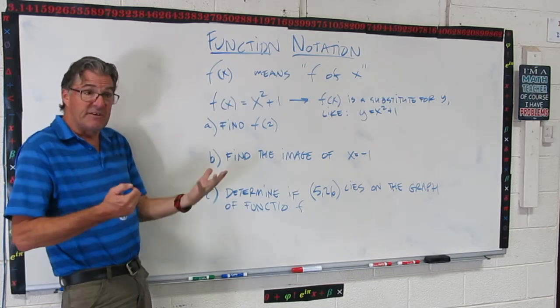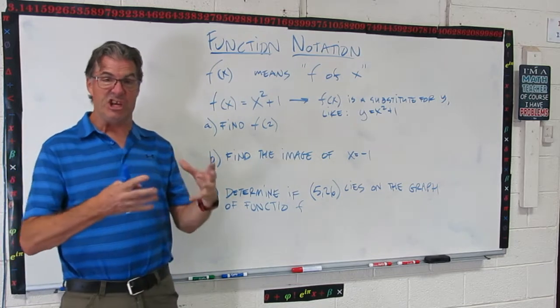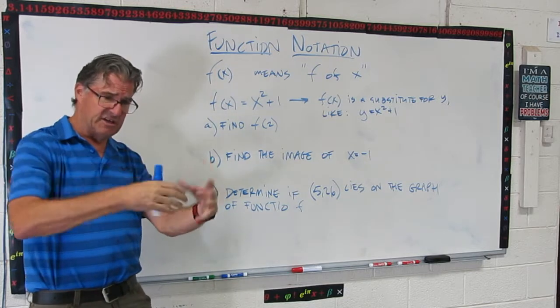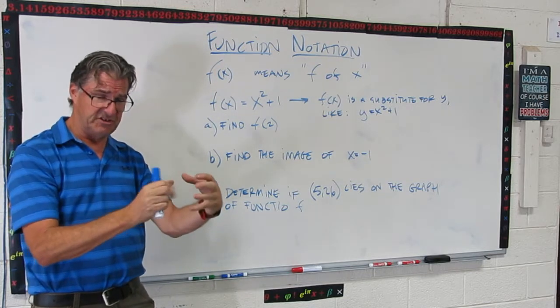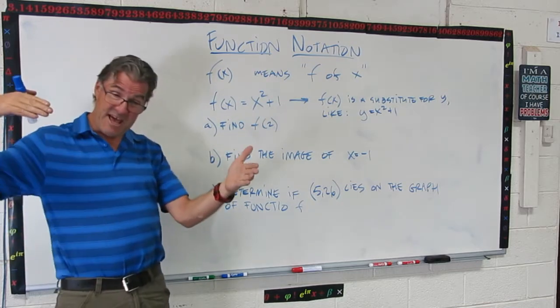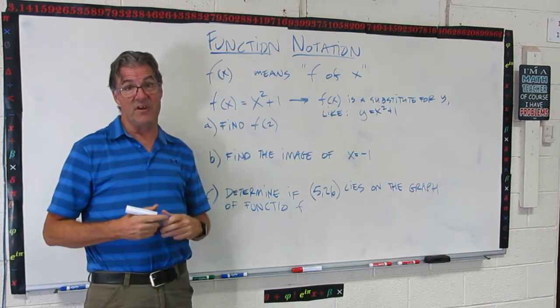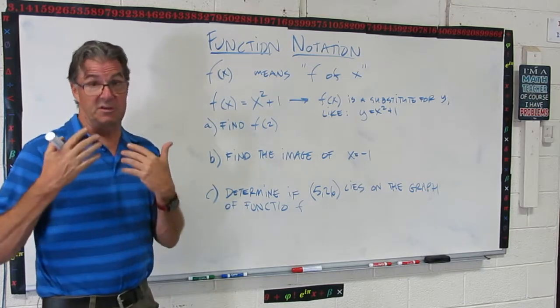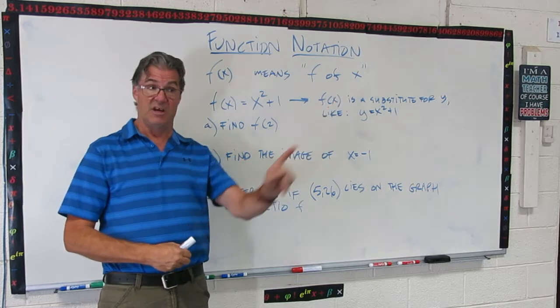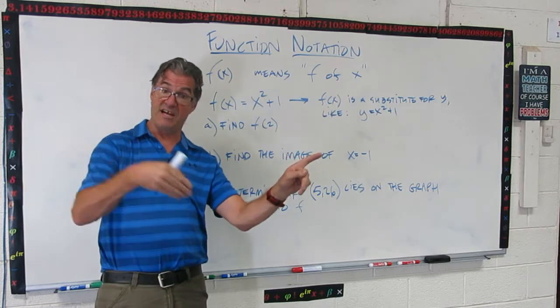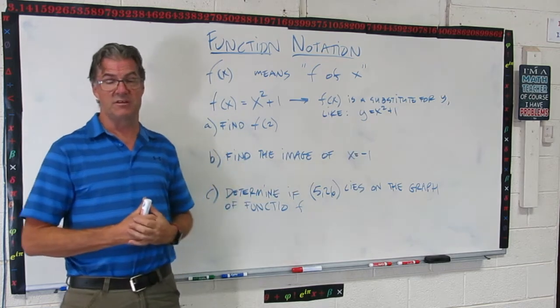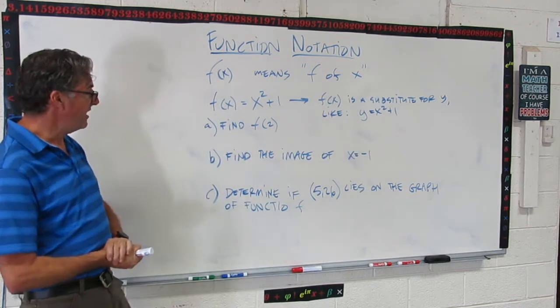So we kind of look at a function as a machine that has some rules inside and you shovel in x values. The machine does what the rules tell it to do and it spits out the y values. And then to review, the x values are the independent variables because you choose those. They're the domain. And the y values are the dependent variables because they depend on what the x is that got put in there, and that's also called the range.